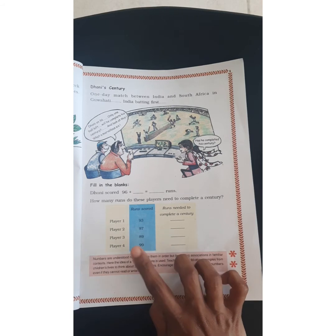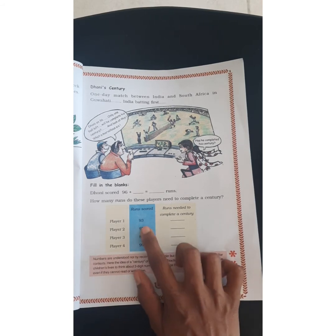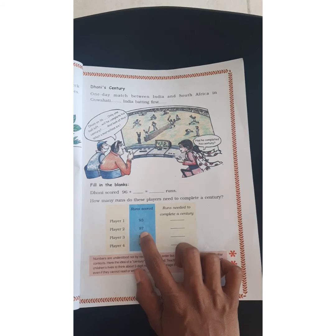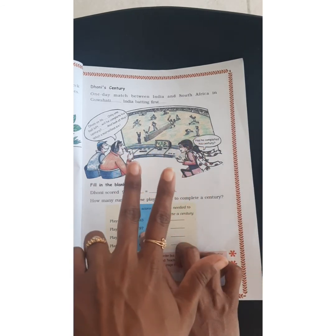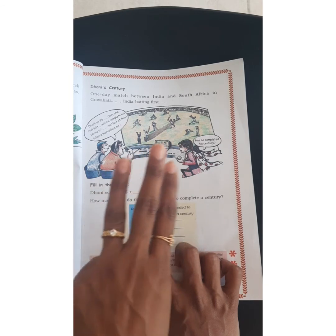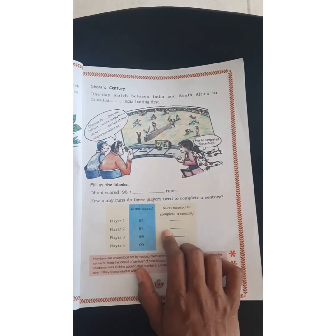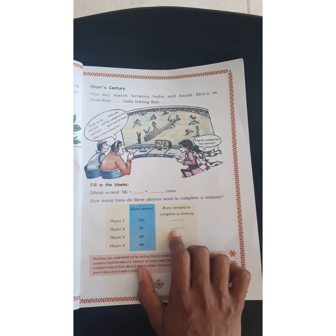Player two has scored ninety-seven runs. He has to complete a century — how many runs does he need? Count forward: ninety-eight, ninety-nine, hundred. Only three runs. He needs only three runs to complete a century.